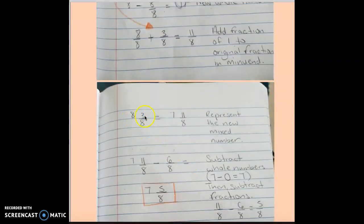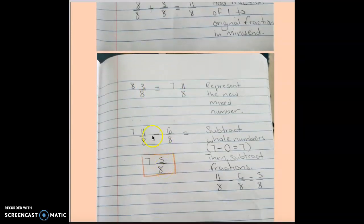So now I know that eight and three eighths equals seven and eleven eighths, and my numerator is large enough to subtract the six. Seven and eleven eighths minus six eighths equals seven and five eighths. I keep the denominator as is and only subtract the numerator. There are no whole numbers in the subtrahend, so I did not subtract seven minus zero.